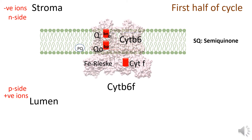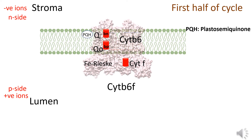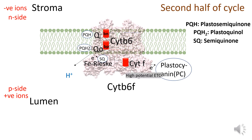At the Qi site, another PQ molecule comes in. The electron present in the Bn heme center is transferred to the PQ at the Qi site, converting it to the semiquinone form. This semiquinone takes up a proton from the stromal side, forming a plastosemiquinone (PQH). The formation of this plastosemiquinone at the Qi site of cytochrome b6 ends the first half of the Q cycle.